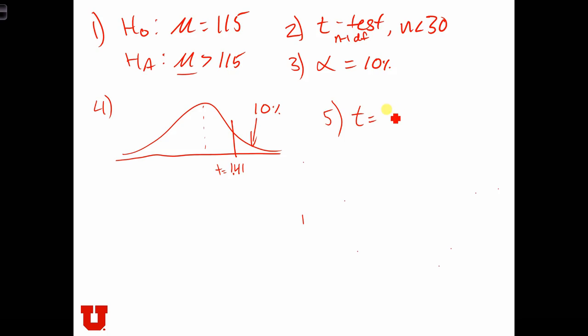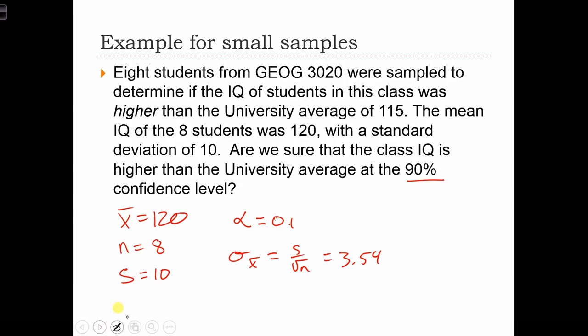t equals x-bar minus mu over the standard error of the mean. So we had 120 minus 115 over the standard error, which was 3.54.